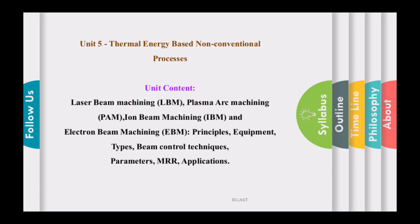Unit number five covers thermal energy based non-conventional processes. We are going to cover laser beam machining (LBM), plasma arc machining (PAM), ion beam machining (IBM), and electron beam machining (EBM). For all these processes we will learn working principles, equipment setup, types, beam control techniques, process parameters, MRR, and different applications.